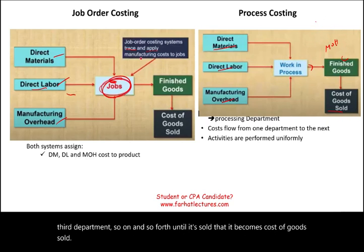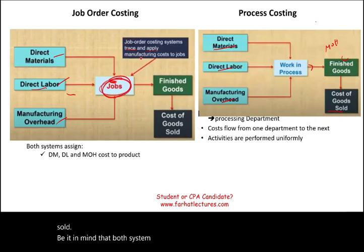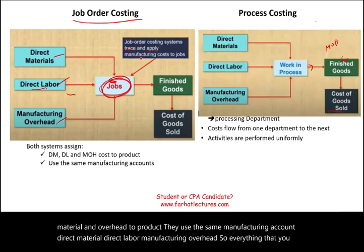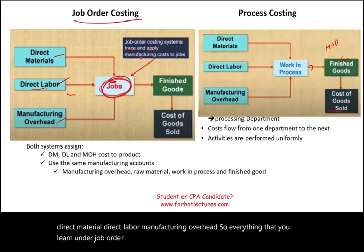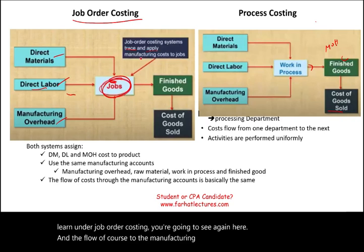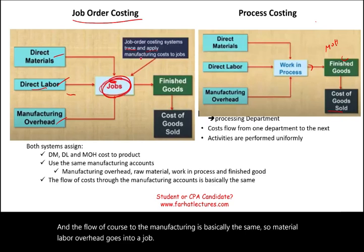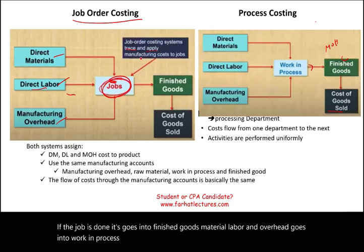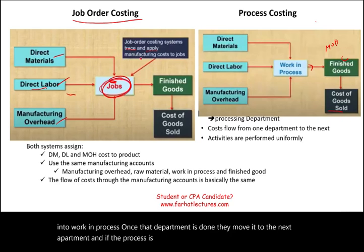Both job order costing and process costing assign labor, material, and overhead to a product. They use the same manufacturing accounts: direct material, direct labor, and manufacturing overhead. Everything you learned under job order costing will appear again here. The flow of cost through manufacturing is basically the same — material, labor, and overhead go into work in process, then to finished goods once complete.